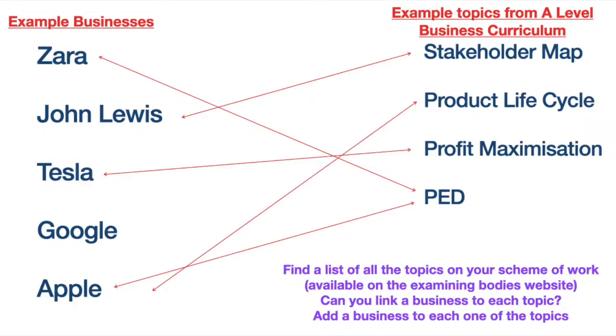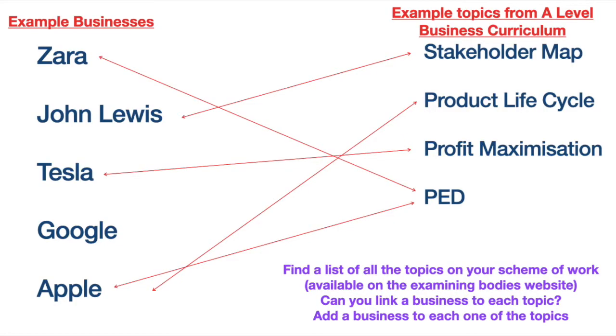Let's go through the topics and see which business to refer to. Stakeholder Map: John Lewis. The Stakeholder Map looks at interest and power. Usually employees have high interest but low power — but for John Lewis, where employees have shares in the business, they have high interest and high power. That gives something interesting to talk about depending on the question.